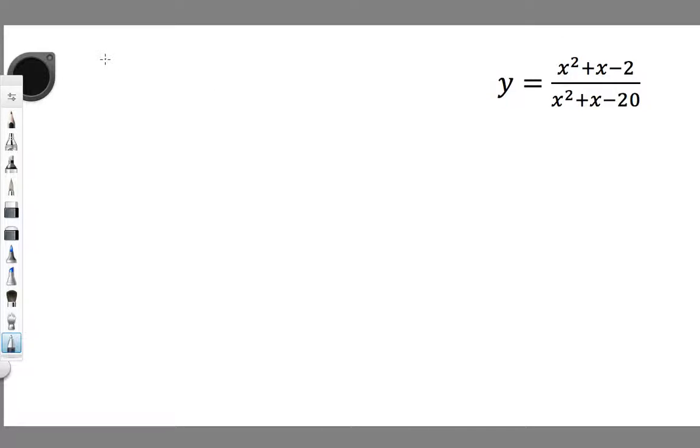If you want to find the x-intercepts, we have to set the numerator equal to 0. We take whatever function is in the numerator, or whatever equation we have or expression, and set it equal to 0. My numerator looks like this: x squared plus x minus 2, and I'm going to set that equal to 0.